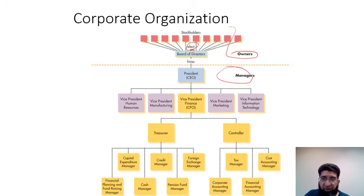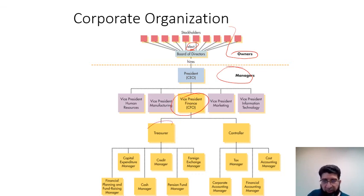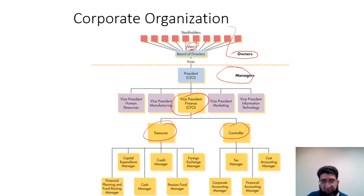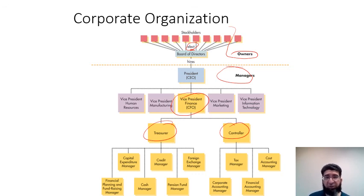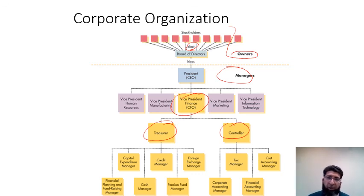Among the vice presidents is the VP of Finance — the CFO — who oversees two important areas: the treasurer and the controller. The controller handles tax and accounting, while the treasurer manages capital expenditure, credit, foreign exchange, pension funds, cash, financial planning, and fundraising. In the next presentation, we will look at the relationship between managerial finance, economics, and accounting — showing how economics and accounting support, rather than contradict, the finance function.